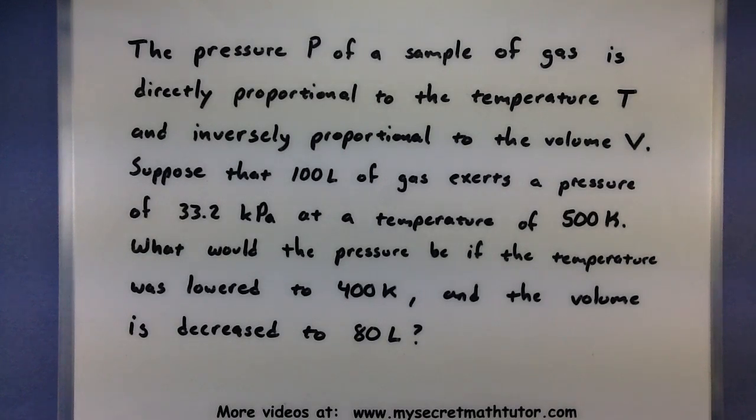Suppose that 100 liters of gas exerts a pressure of 33.2 kilopascals at a temperature of 500 kelvin. What would the pressure be if the temperature was lowered to 400 kelvin and the volume is decreased to 80 liters? So a lot of stuff later on. We'll use that to figure out the k, but first we just need to figure out this formula.